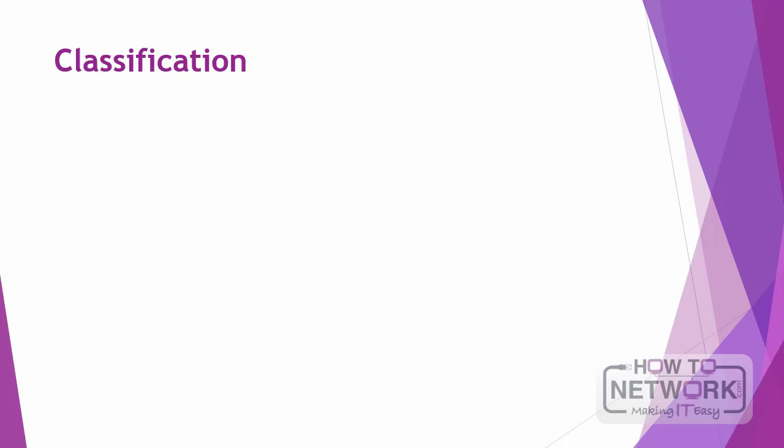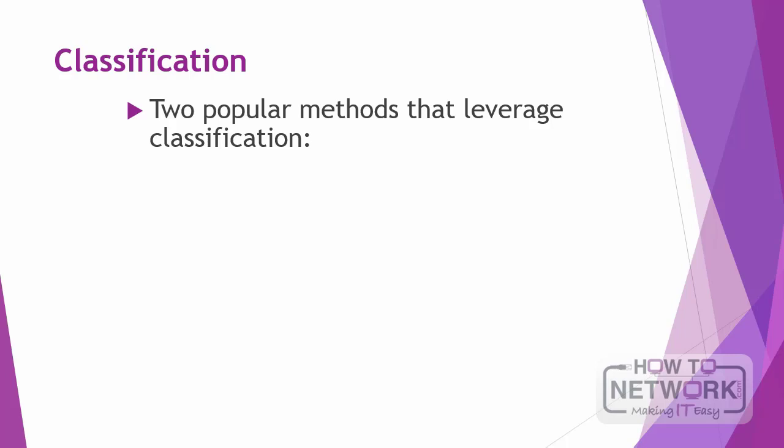Let's begin with classification. For a flow to have priority, it must first be identified and marked — both of these tasks are referred to as classification. The following are popular technologies which support classification.